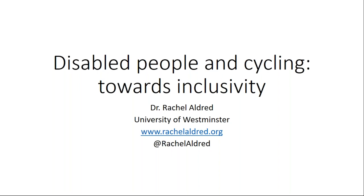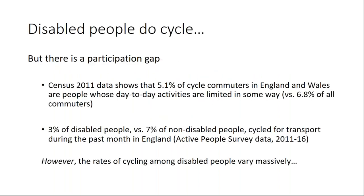We also did some reanalysis of data from other surveys. The statistics show that disabled people do cycle in the UK and England, but there is a participation gap. In terms of the census travel-to-work data, just over 5% of cycle commuters in England and Wales have some kind of disability — the census question being whether your day-to-day activities are limited in some way — compared to just under 7% of all commuters who report being disabled. From the Active People Survey, 3% of disabled people compared to 7% of non-disabled people cycled for transport during the past month in England. Cycling levels are generally low, but disabled people do cycle — there is a gap.